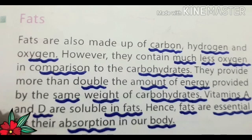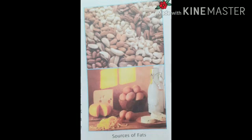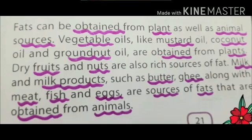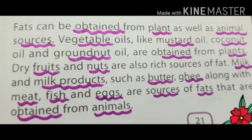Now let's look at the sources of fats. We have nuts, milk, ghee, butter, and so on. Both plants and animals are sources of fats. From plants, we get mustard oil, groundnut oil, coconut oil, and nuts. From animals, we get milk and milk products such as butter, ghee, meat, fish, and eggs. So sources of fats for us are both plants and animals.